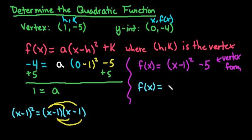which is square the first term, find twice the product, which would give me negative 2x, plus 1 minus 5. And so, our final answer would be f of x equals x squared minus 2x minus 4.